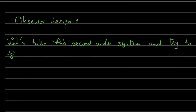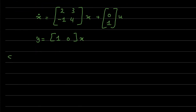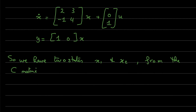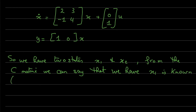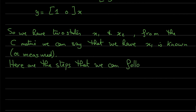We have this example with matrix A and matrix B, and we have output Y. We have to find the observer for this second-order system with X1 and X2. From the C matrix, as you can see, we know that X1 is measured. Here are the steps we can follow in order to find the observer.